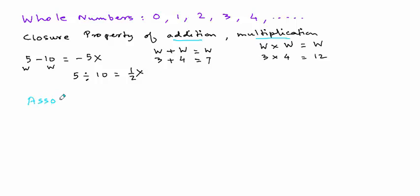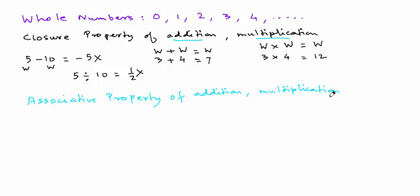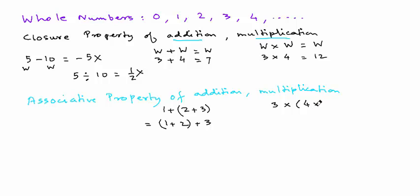There's something called the associative property, and that again works for addition and multiplication. It tells us that in an addition or multiplication sentence, the grouping doesn't really matter. For example, 1 plus 2 plus 3, with 2 plus 3 in one group, can be rewritten as (1 plus 2) plus 3, and the end result is the same. For multiplication, 3 times 4 times 5 is exactly the same as (3 times 4) times 5. That's what the associative property is about.